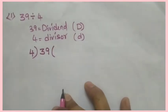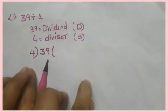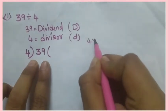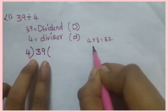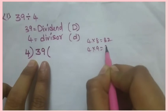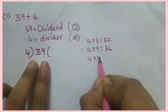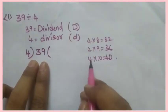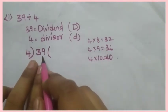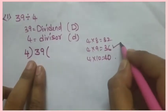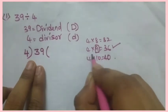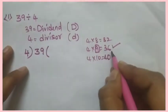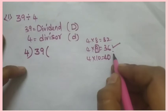To do this problem we have to get the 4 times table. 4 eights are 32, 4 nines are 36, 4 tens are 40. In the 4 table we will not get 39. We will get 36. When we get 4 nines are 36, we have to take the same number or the number before it.